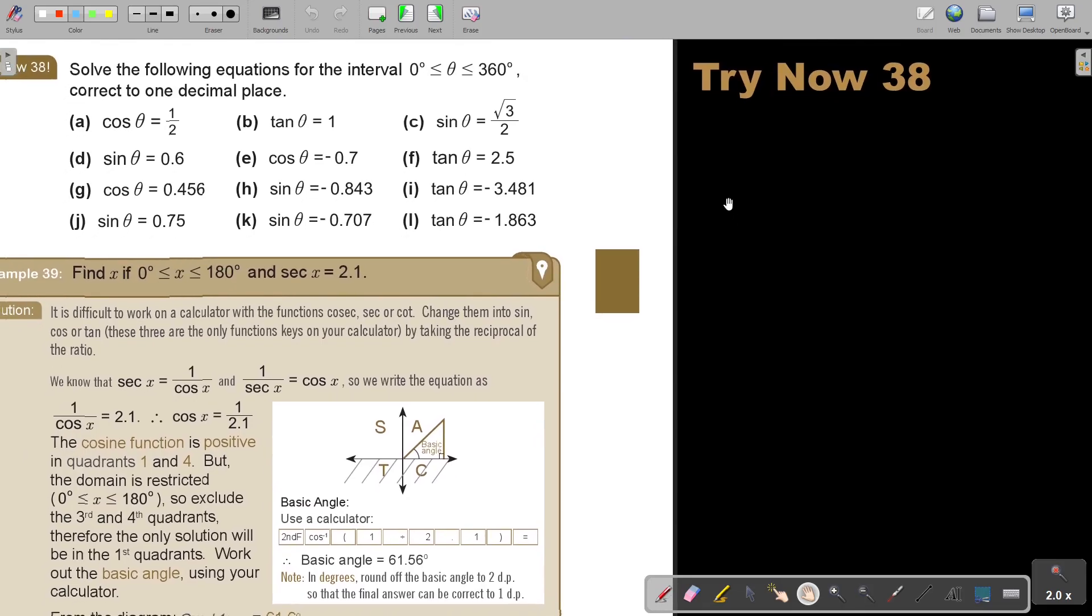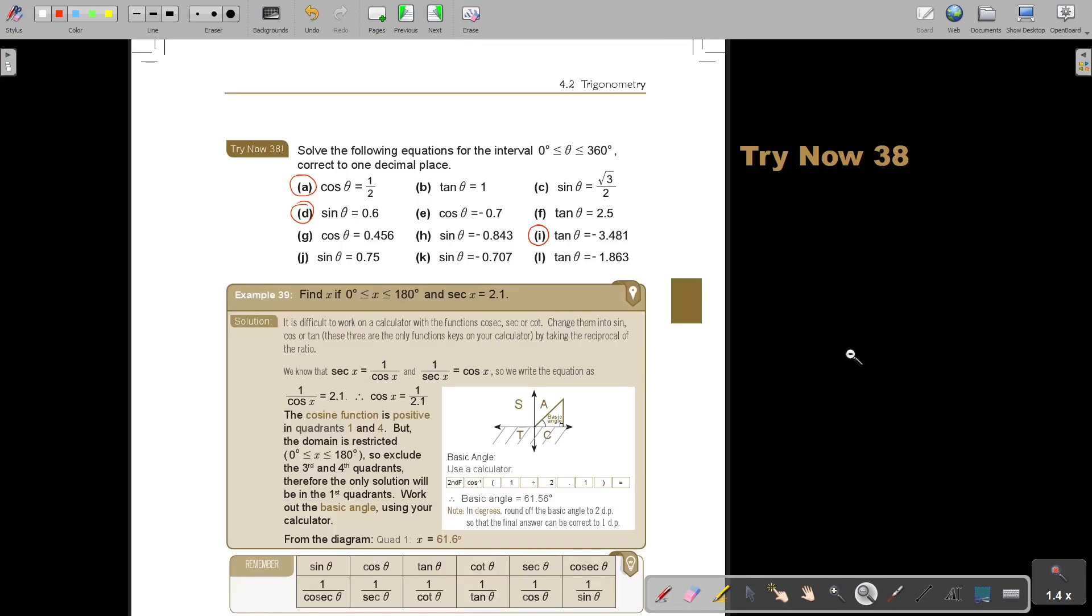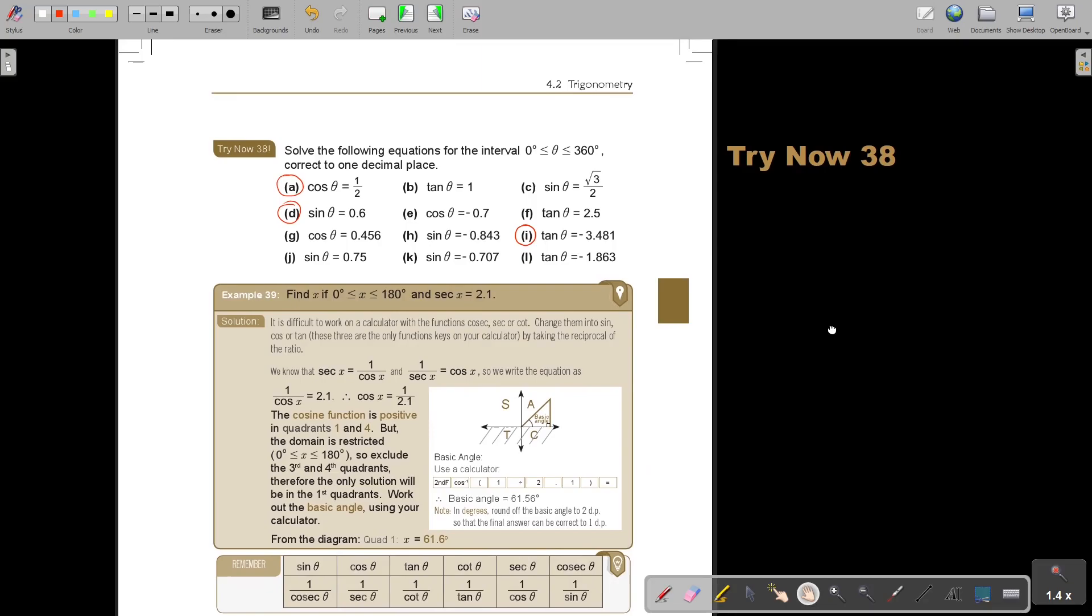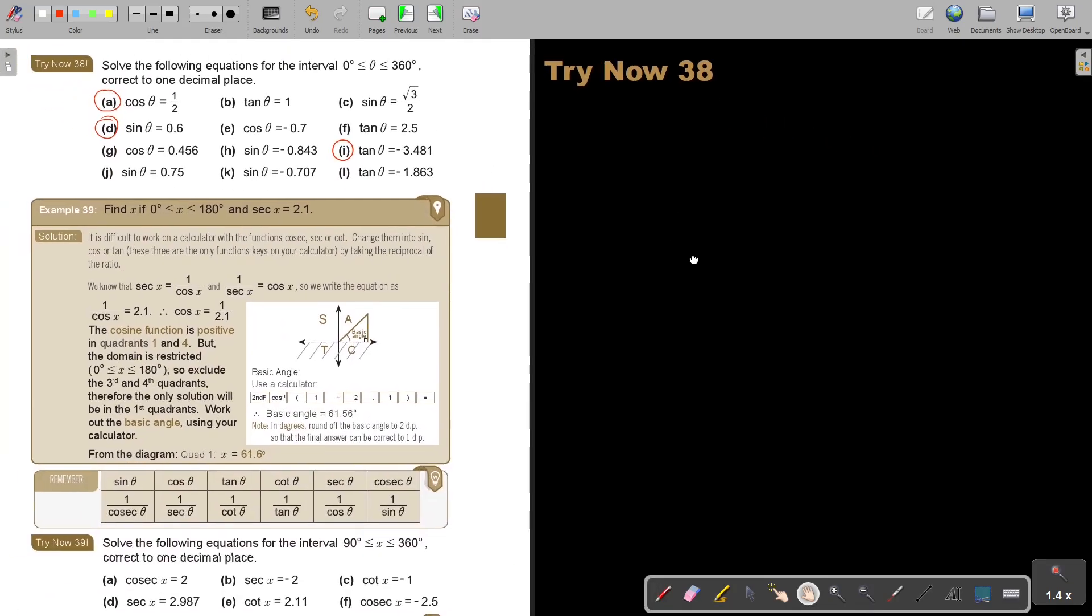Let's give you one of each. A is a nice one. We did a negative sin one, so we can do a positive sin one. And then we can do a negative tan one. You can just do those three. As soon as you are finished, stop the video, and then you can continue.